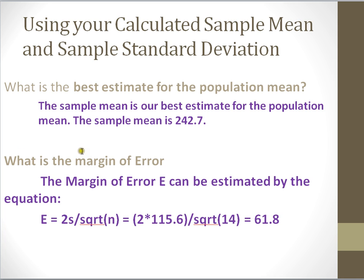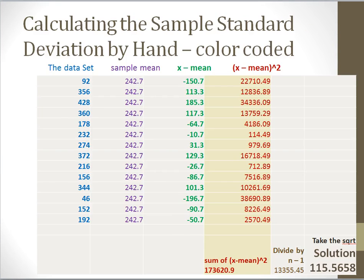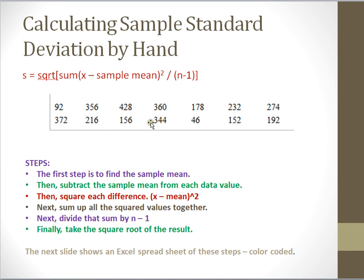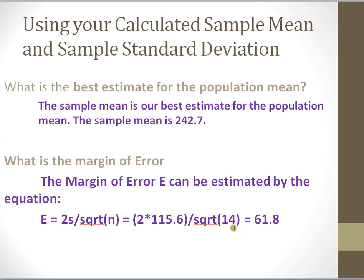The next question is: what is the margin of error in order to estimate our population mean? I want to use our sample mean and also our sample standard deviation that we just calculated. The formula for the margin of error is 2 times the sample standard deviation divided by the square root of our sample size. Remember, our sample size was 14 — there are 14 values in this sample. The standard deviation of our sample that we calculated was 115.6. So if we multiply that by 2 and divide by the square root of our sample size, we get 61.8. That is our margin of error.